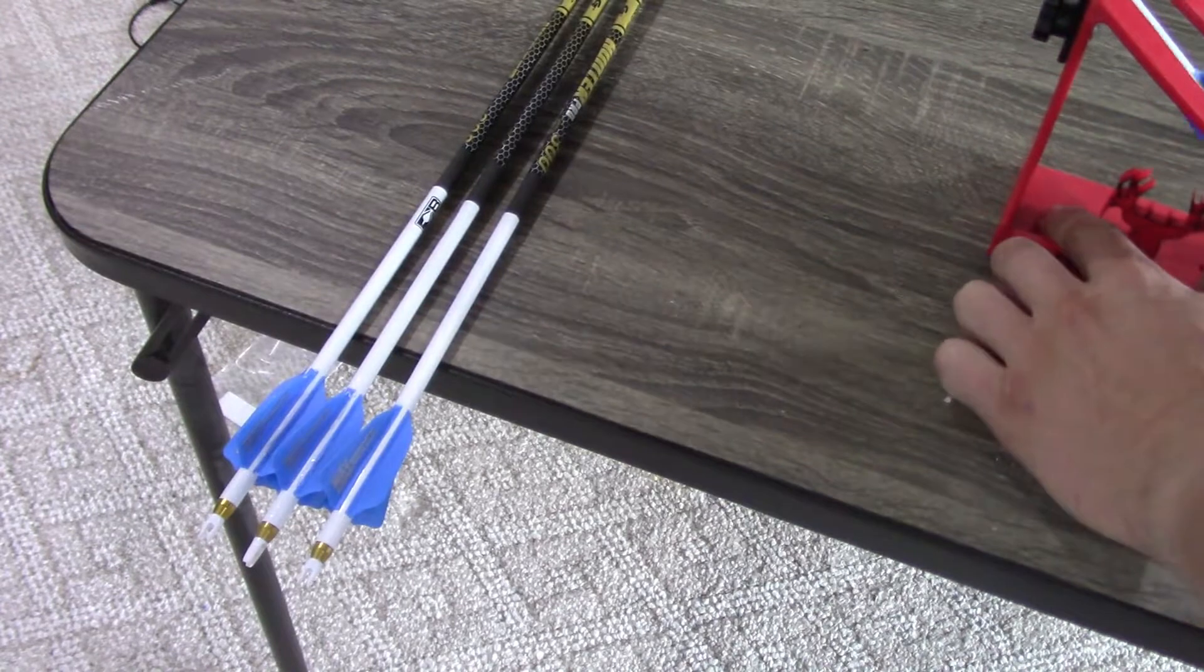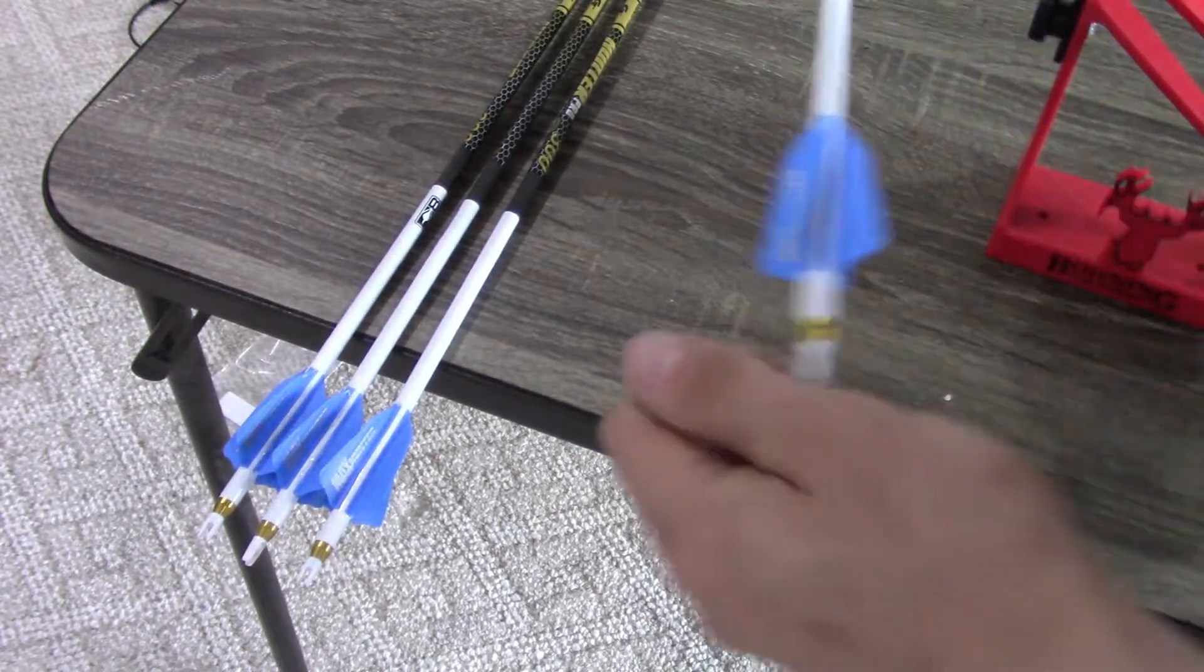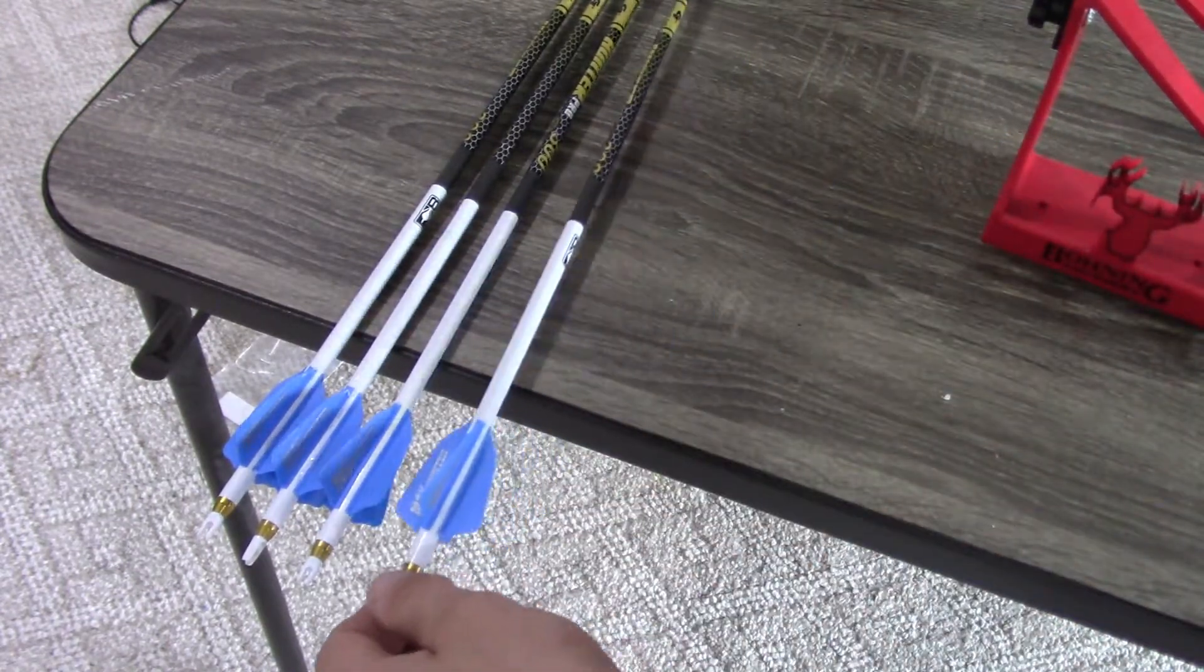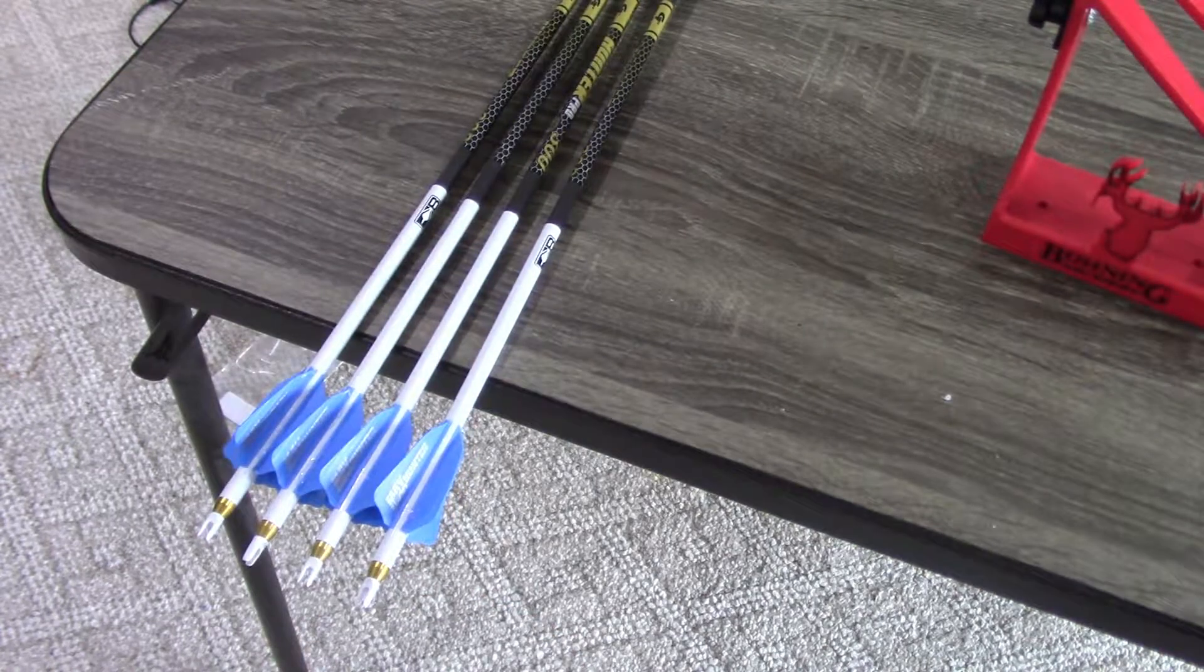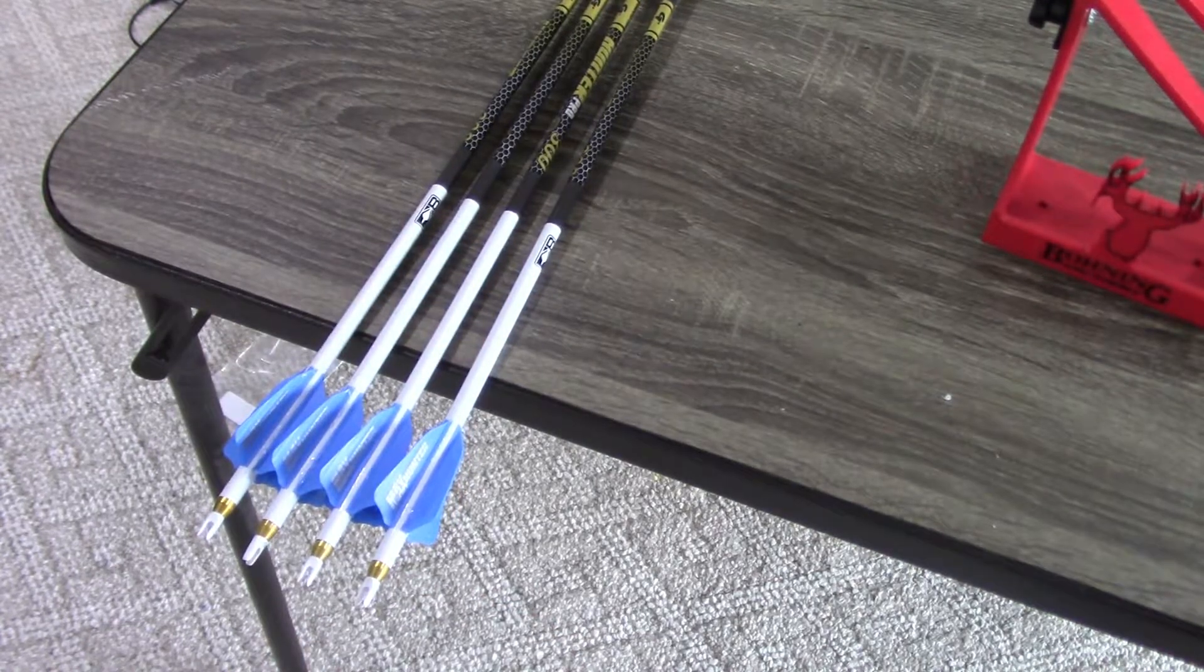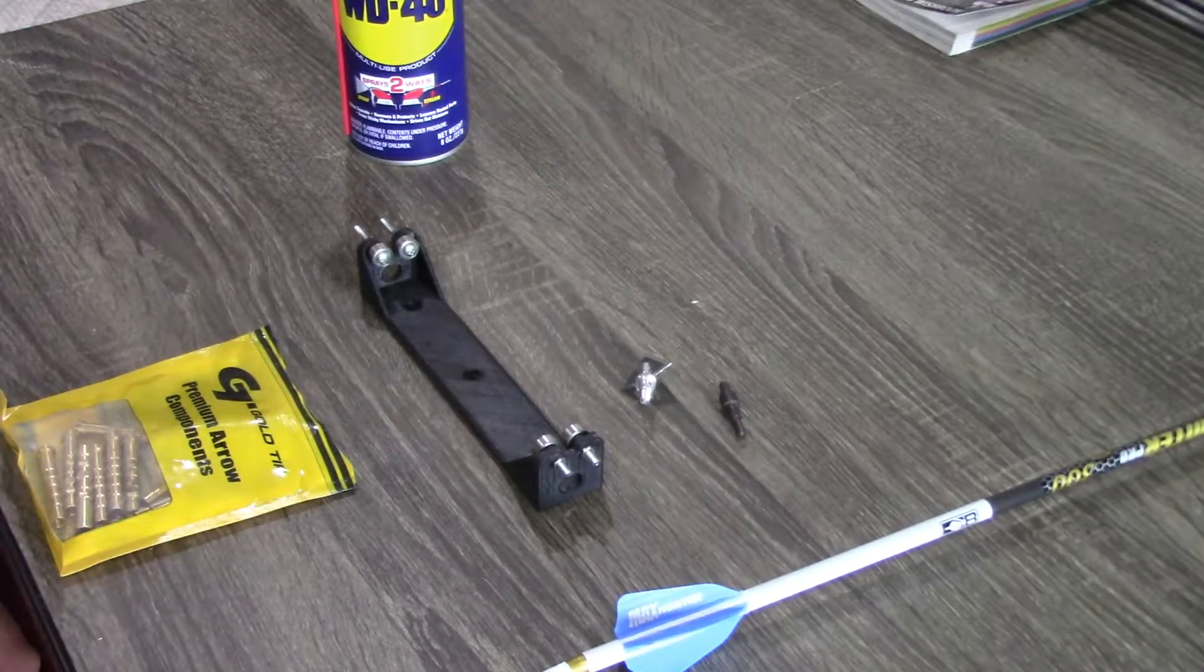Once I've completed the arrow, I just set it off the end of the table here. I don't want any pressure on the veins, and I'm just going to leave them to dry here for about 24 hours.